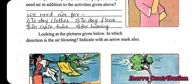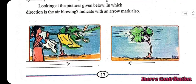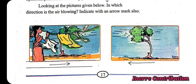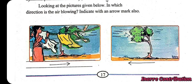Looking at the pictures given below, in which direction is the air blowing? Indicate with an arrow mark. We are supposed to draw an arrow showing the direction the air is blowing.